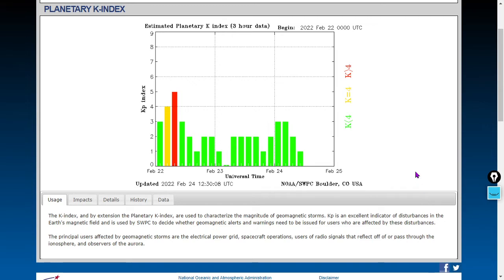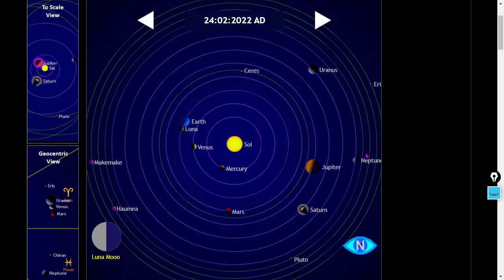The Kp index is at one, that's a measurement of global geomagnetism. For you new viewers out there, each bar represents three hours. That's the planetary K index, and let's look at the planetary forecast.